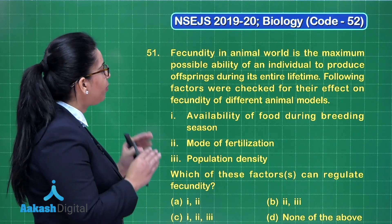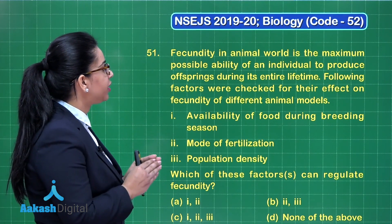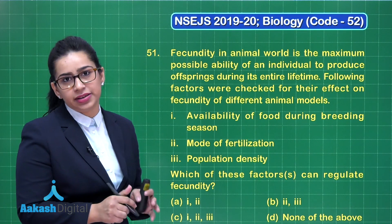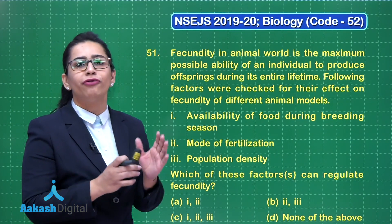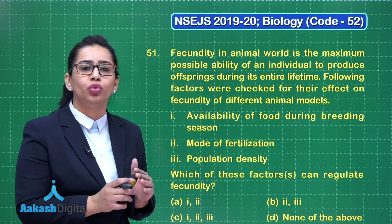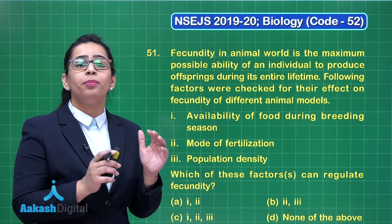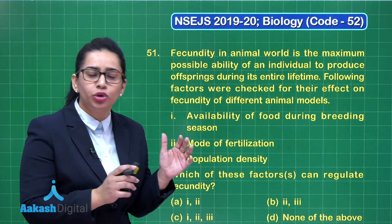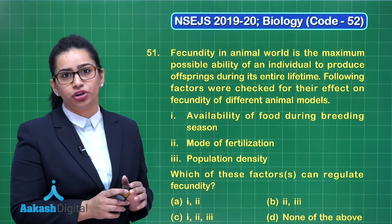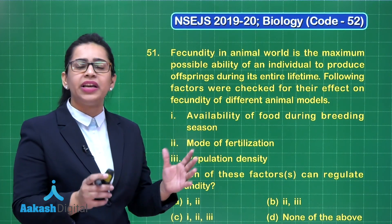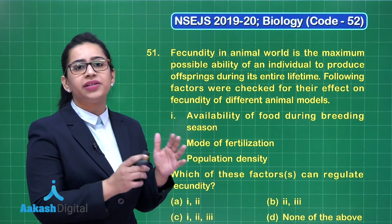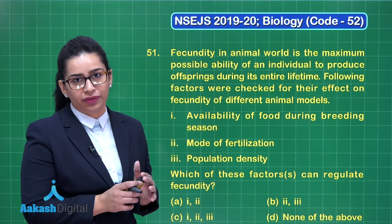The first factor is availability of food during breeding season. Food supply is an important environmental cue that makes the animal decide how much to invest in reproduction. Animals obviously need energy to reproduce, so yes, food availability is an important factor.